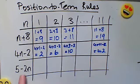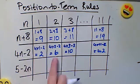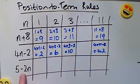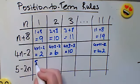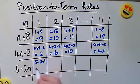The last one here, notice it's a negative 2n, so these were sequences that increase, this would be a decreasing sequence. If n is 1, that would be 5 take away 2 times 1, 5 take away 2 is 3.